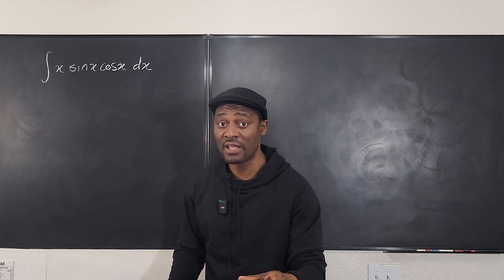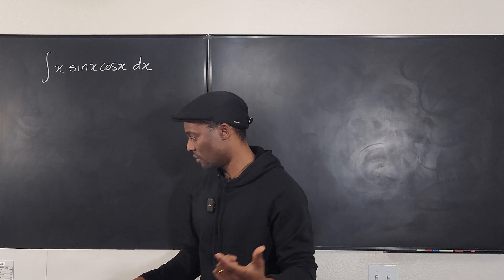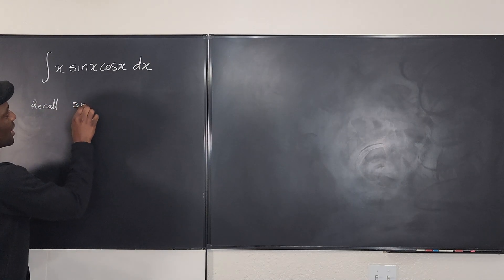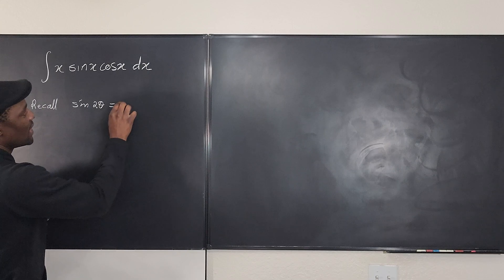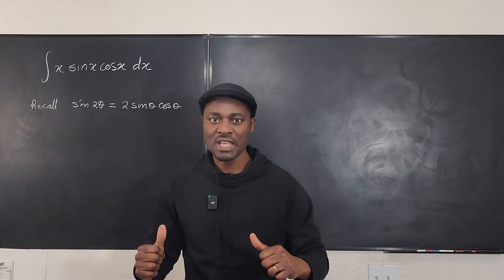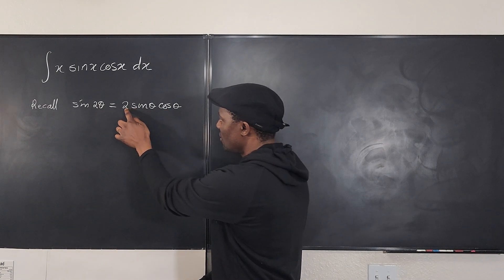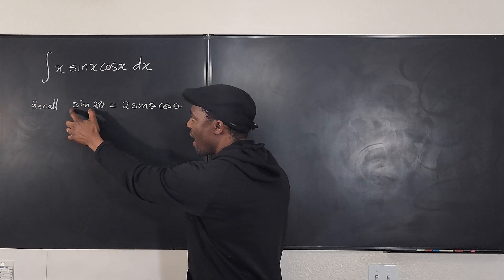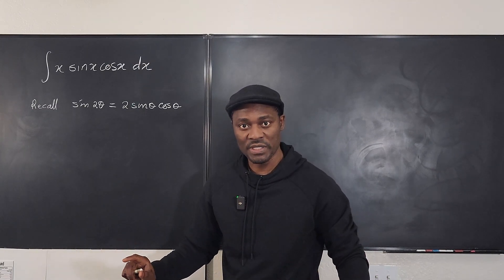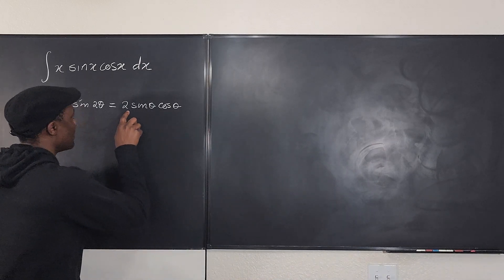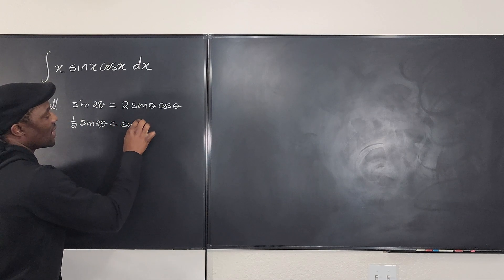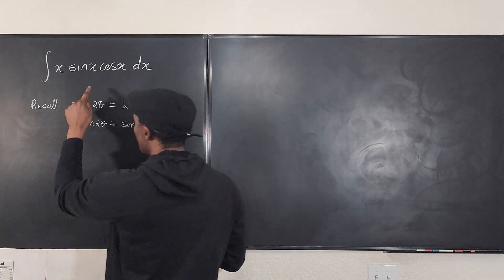One of the basic first identities you'll learn when you go into double angles is the double angle formula for sine. If you recall, sin(2θ) = 2·sin(θ)·cos(θ). Do you see that we can isolate the sin(θ)cos(θ) part? We just divide both sides by 2, so sin(θ)cos(θ) = (1/2)·sin(2θ). That's the good thing about trig identities — for integrals, they always help out.